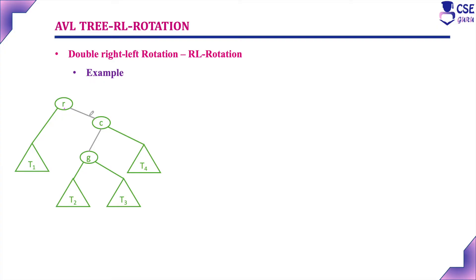Now consider a general example. The root node is R and the right subtree has right child C and its grandchild G. T1 is the left child of R, T2 is the left child of G, T3 is the right child of G, and T4 is the right child of C. Before insertion this tree is balanced. If we insert a new node into the right subtree of the left child — that is under T2 or T3 — the tree may become unbalanced, so we must perform RL rotation.